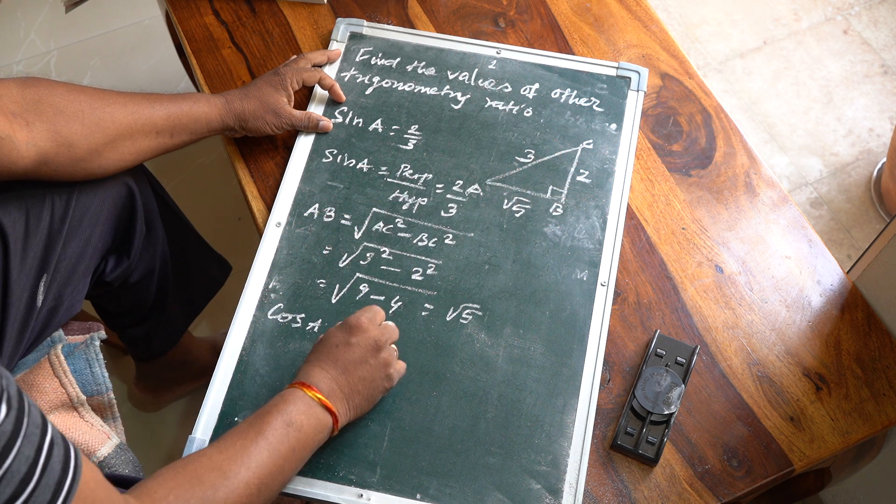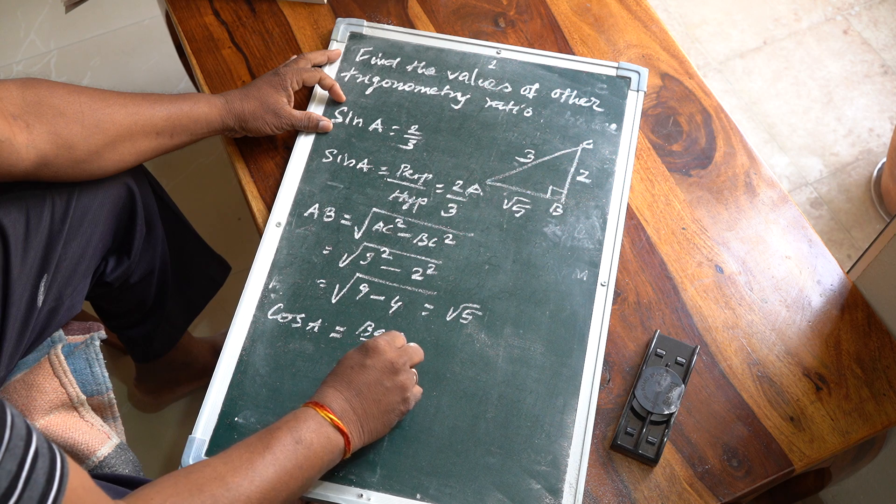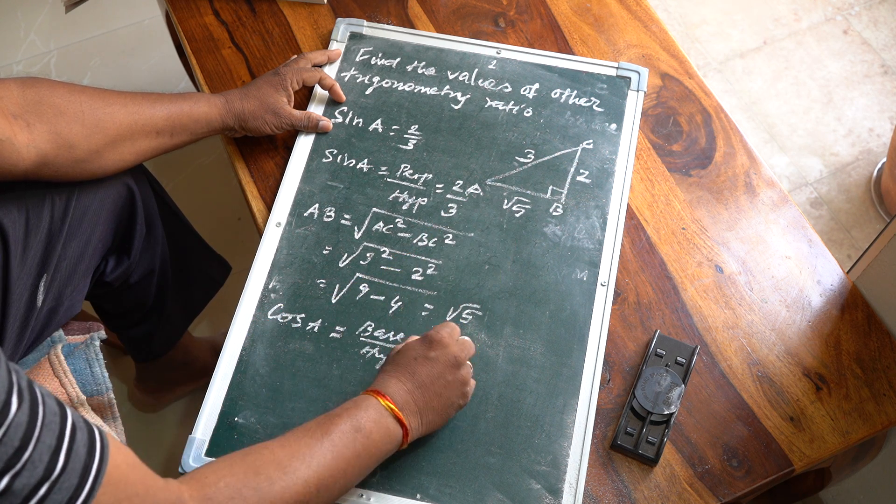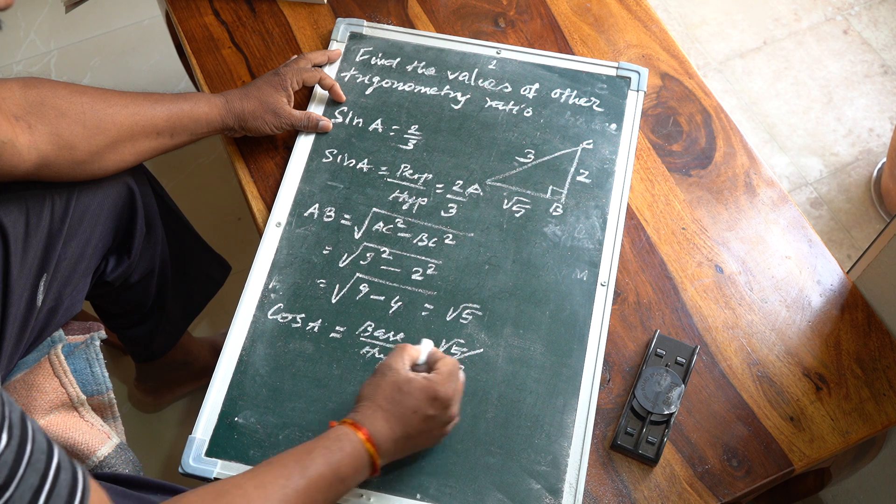So there is a base value - it is √5, and the hypotenuse value is equal to 3.